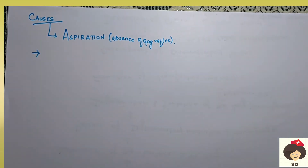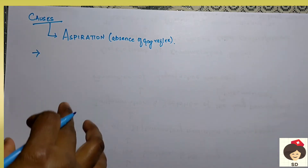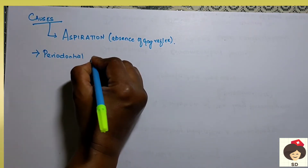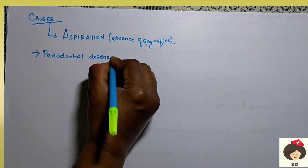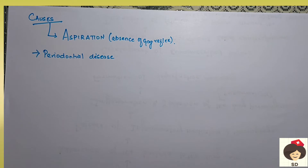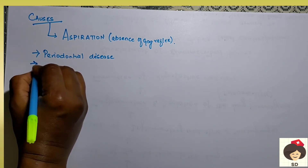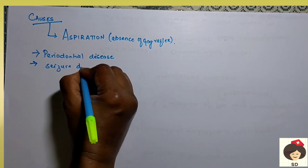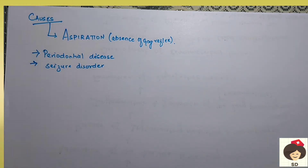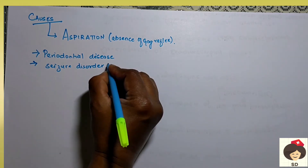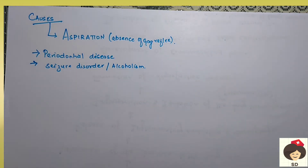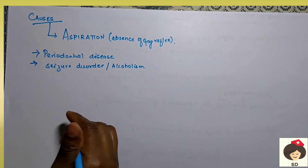When a person's swallowing reflex is absent due to some diseases, it can cause lung abscess. First is any periodontal disease — meaning any infection of the teeth and gums. When a person has an infection of the gums, oral cavity microorganisms can enter inside the lungs. It can also be due to seizure disorder — meaning fits, where the person accidentally aspirates saliva and secretions into the lungs. Or it can be due to alcoholism, where the person's mental status is disturbed and he can aspirate secretions.